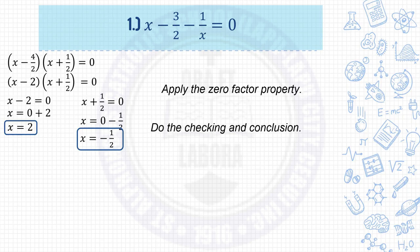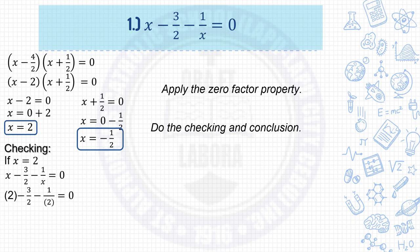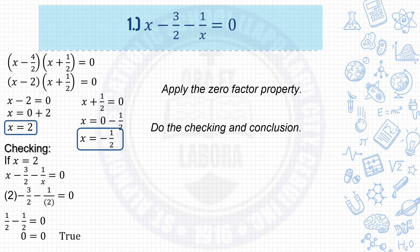Do the checking and conclusion. Checking: if x equals 2, write the given and substitute x equals 2. You get 2 minus 3 over 2 minus 1 half equals 0. That simplifies to 2 minus 3 halves equals 1 half, and 1 half minus 1 half equals 0. So 0 equals 0, which is true.